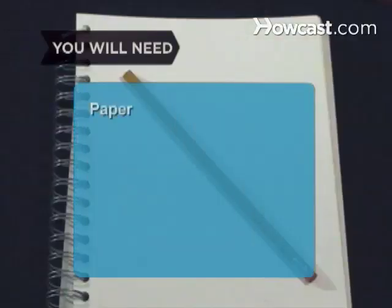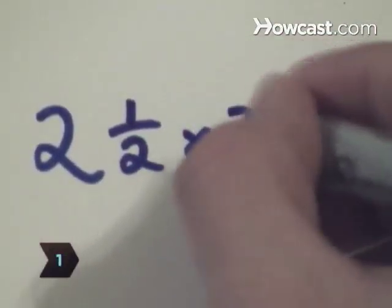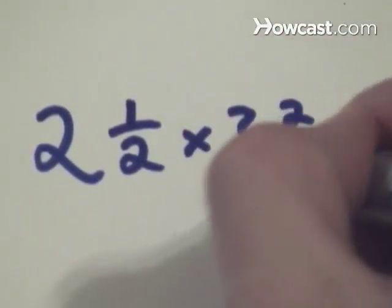You will need paper and a pencil. Step 1: Write your mixed numbers down on a piece of paper to convert them to improper fractions.